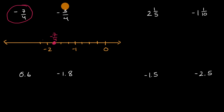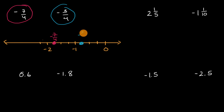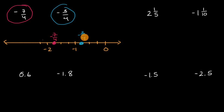And where is negative three fourths on the number line? Negative one fourth, negative two fourths, negative three fourths. So which one is greater? We can see that negative three fourths is to the right of negative seven fourths, so negative three fourths is greater, or negative seven fourths is less than negative three fourths. So I'll put a less than sign right over here.